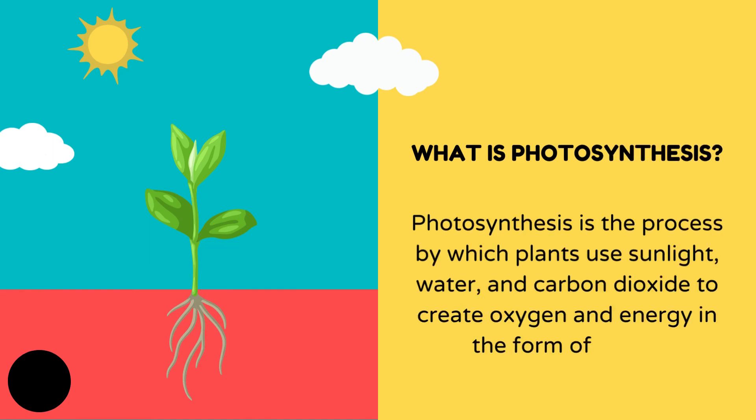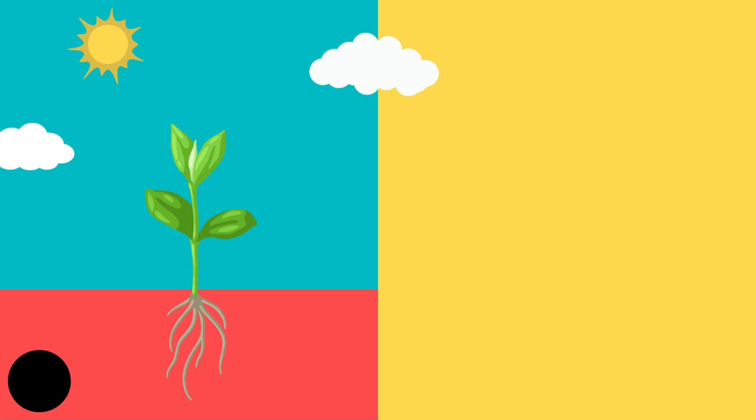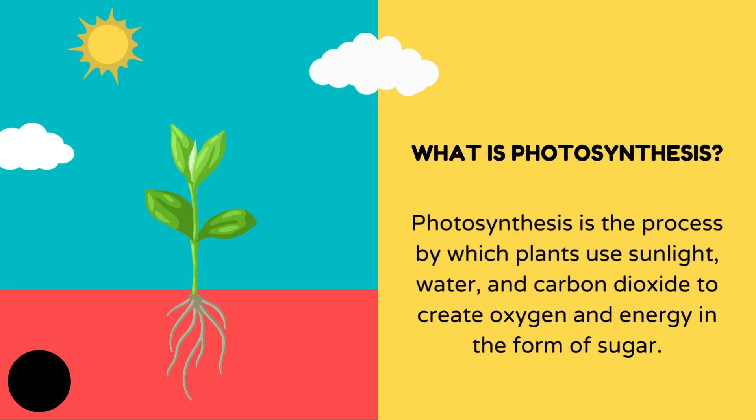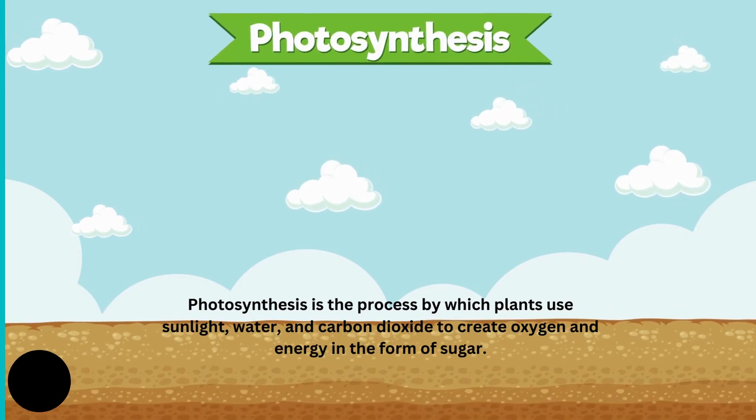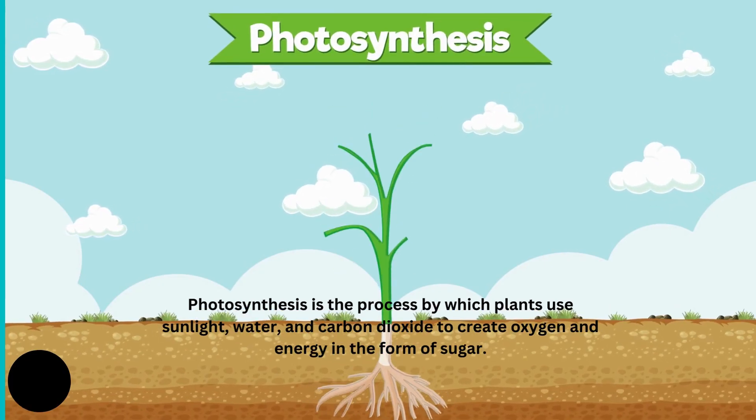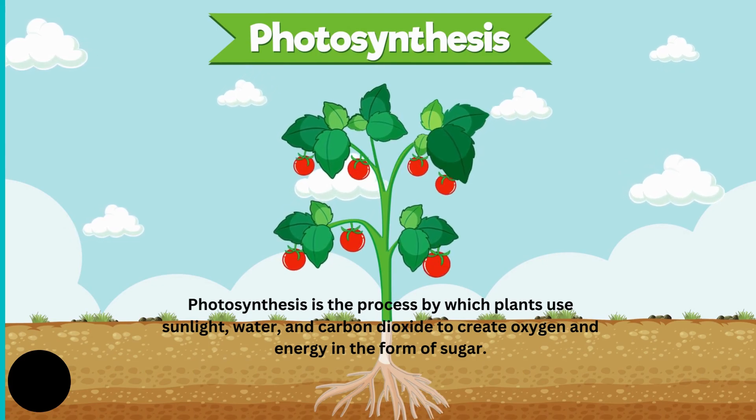Photosynthesis is the process by which plants use sunlight, water and carbon dioxide to create oxygen and energy in the form of sugar.